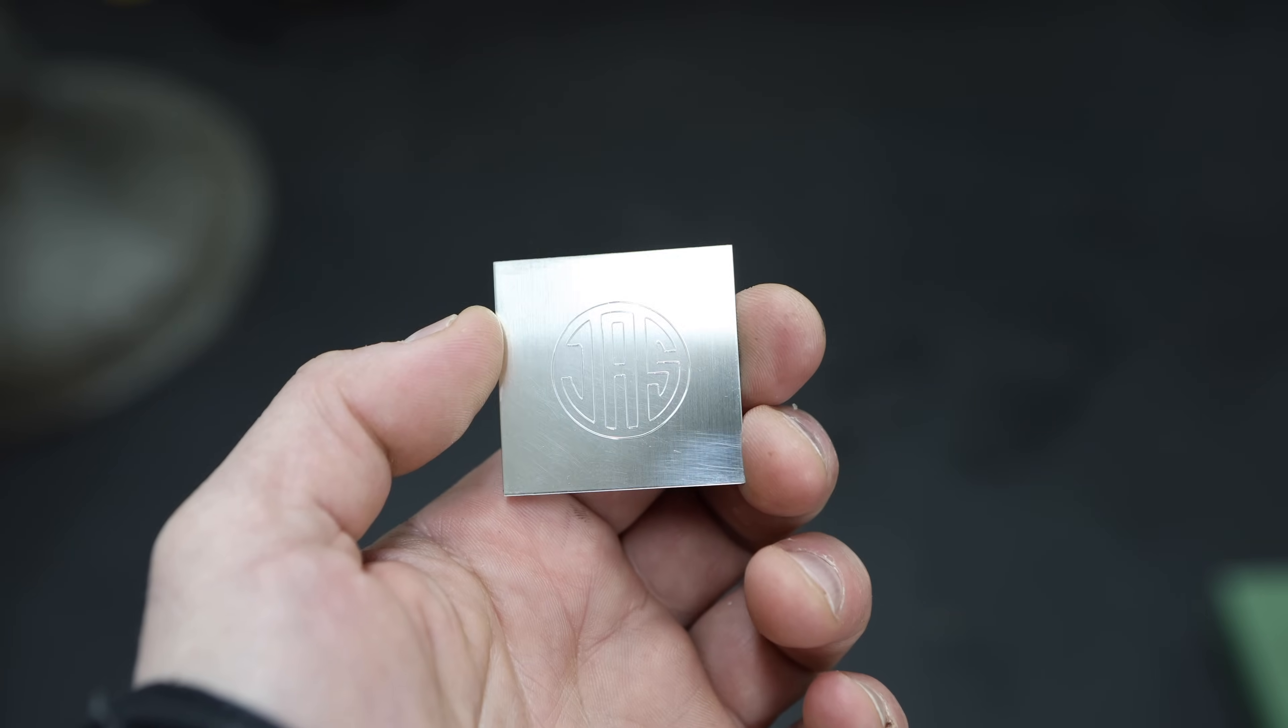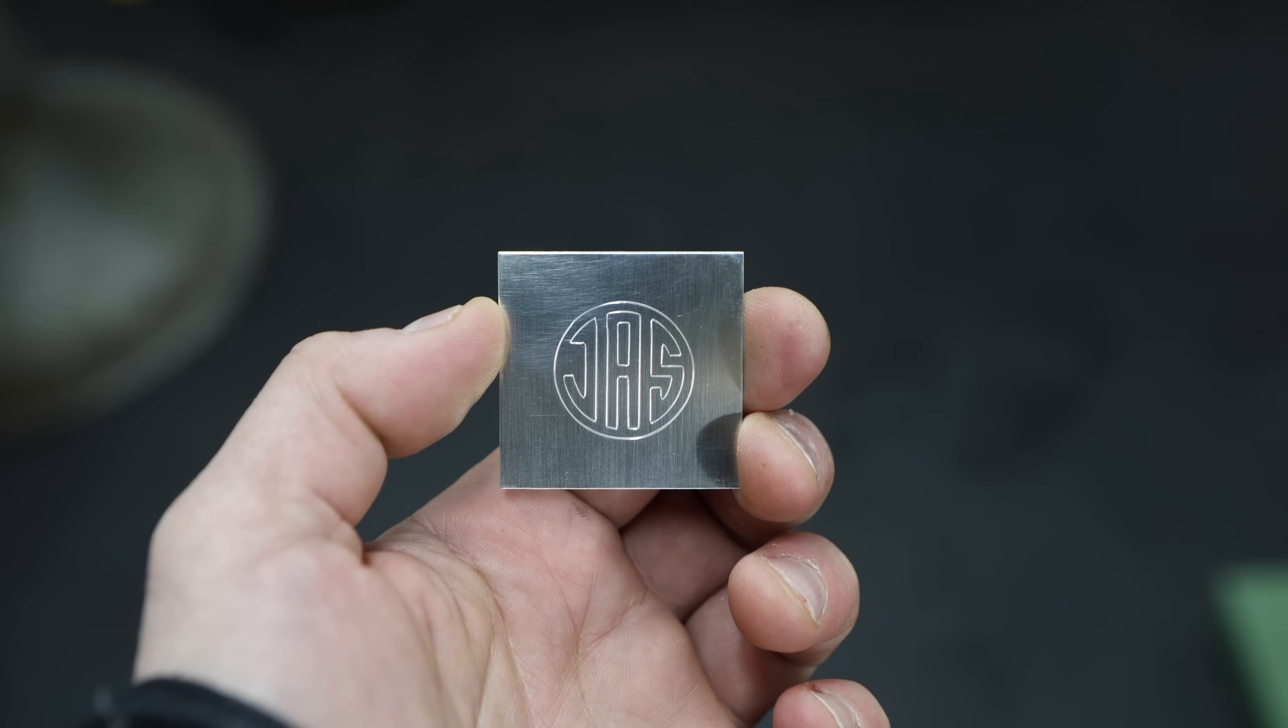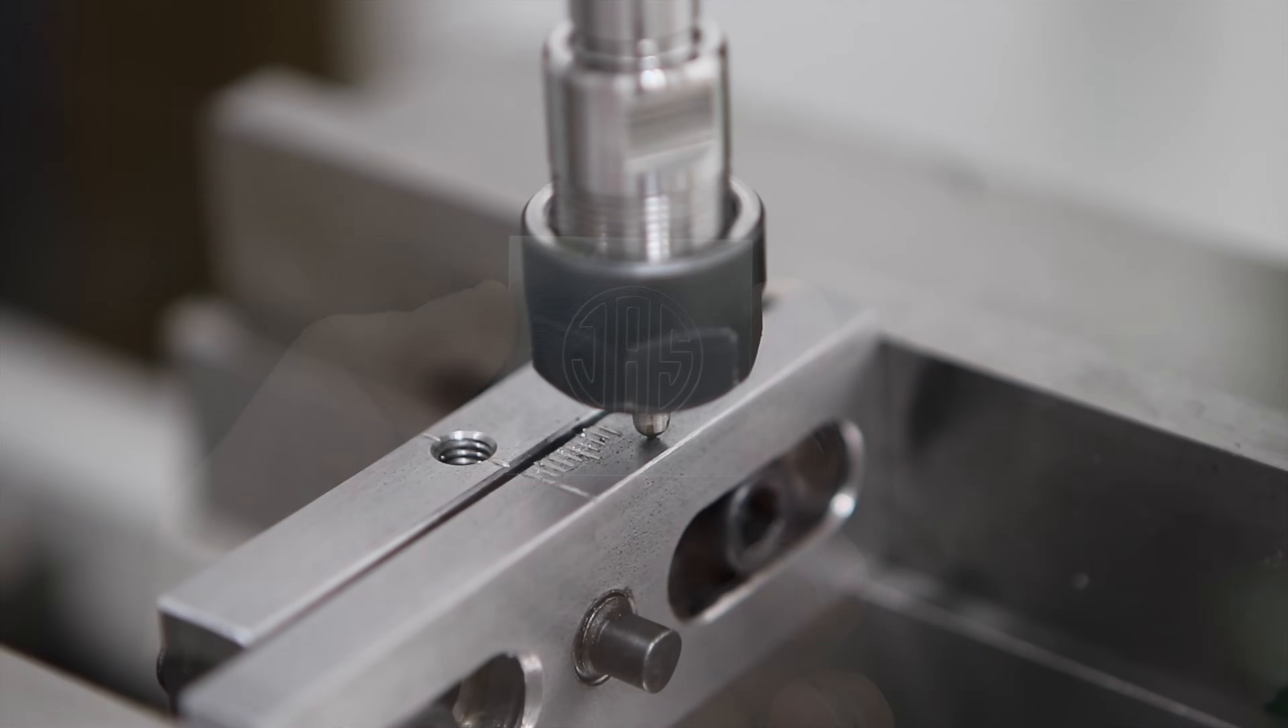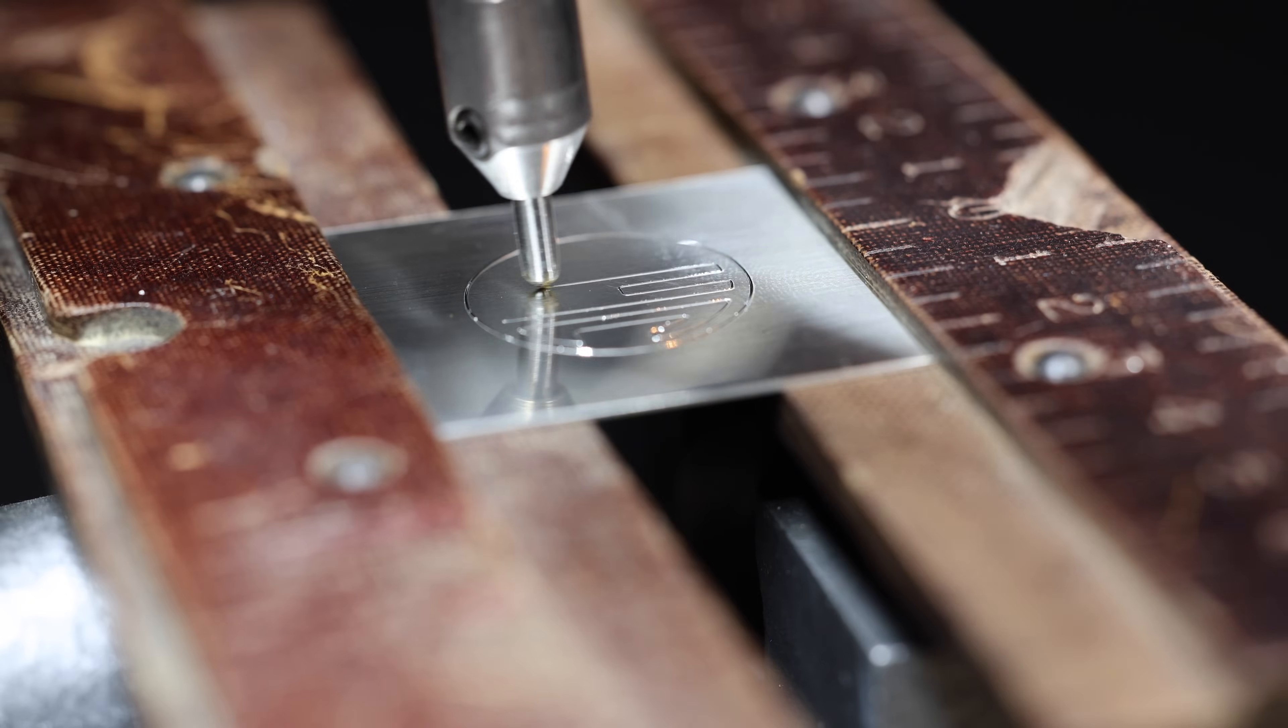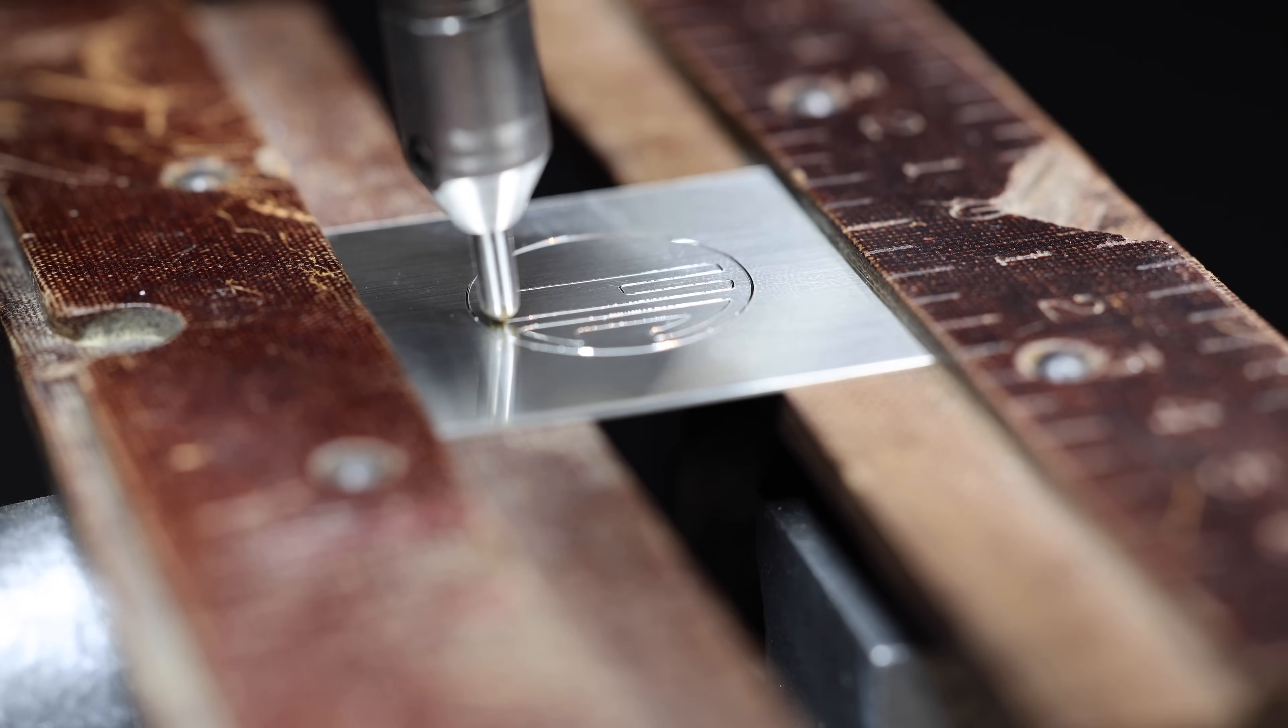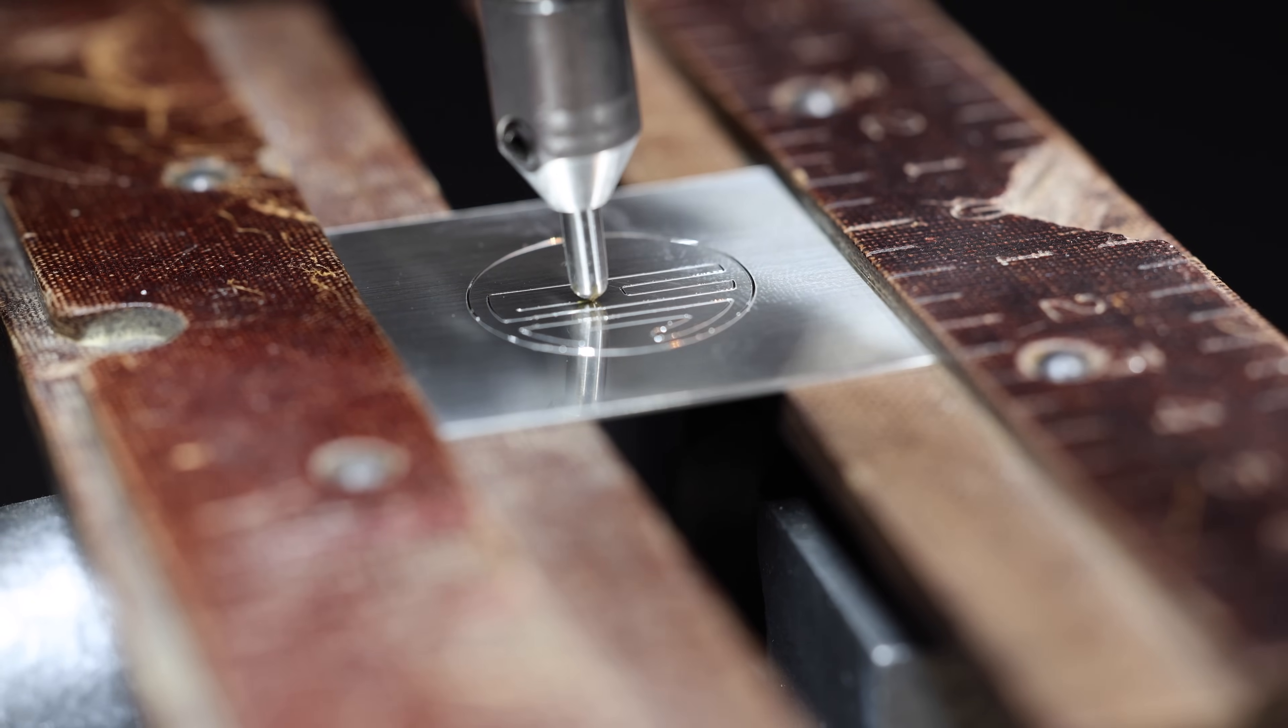For some time now I've been looking for a way to improve how I engrave and mark metals in the home workshop. I've tried engraving in the milling machine, I've tried stamping and I've tried pantographs, but to date nothing has really offered the resolution or the precision that I've been looking for.